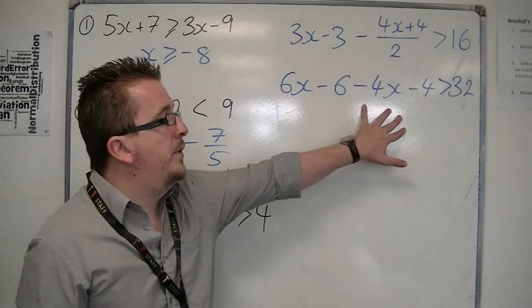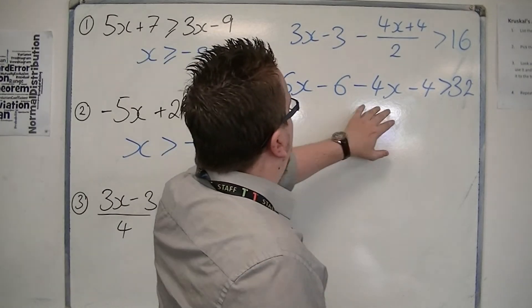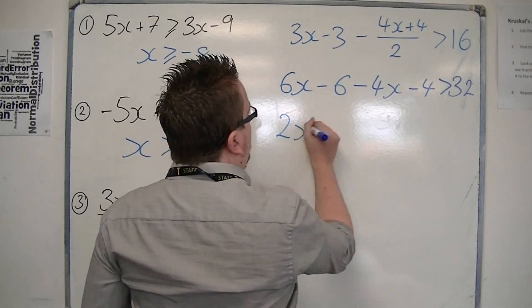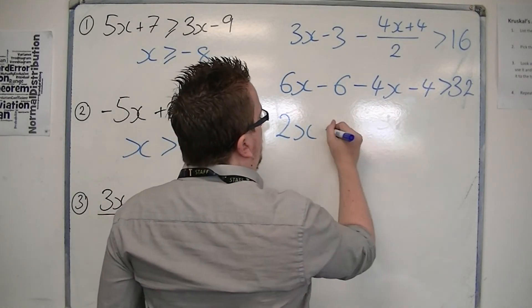Now we can simplify the left side. 6x minus 4x is 2x. Minus 6 minus 4 is minus 10, so 2x minus 10 is greater than 32.